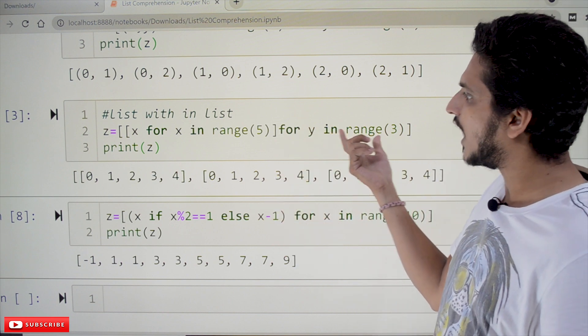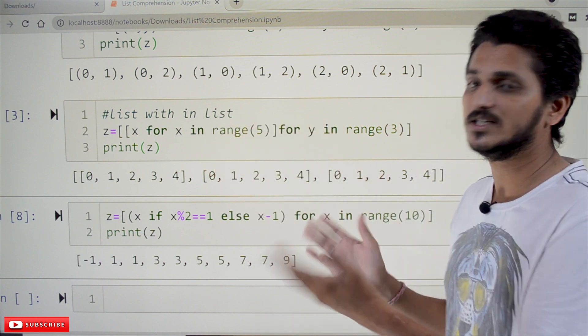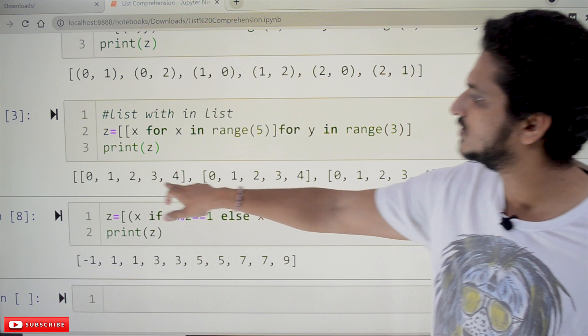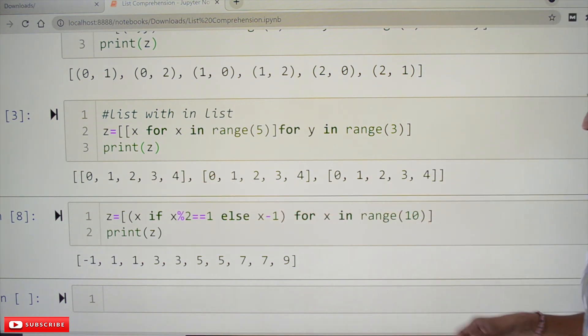This execute for 3 times. And this will be displayed for 3 times. That is how nested loops will be created. So, [0, 1, 2, 3, 4], [0, 1, 2, 3, 4], [0, 1, 2, 3, 4]. We have created a nested list.